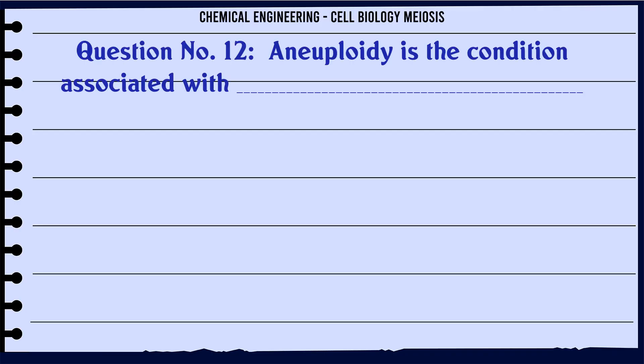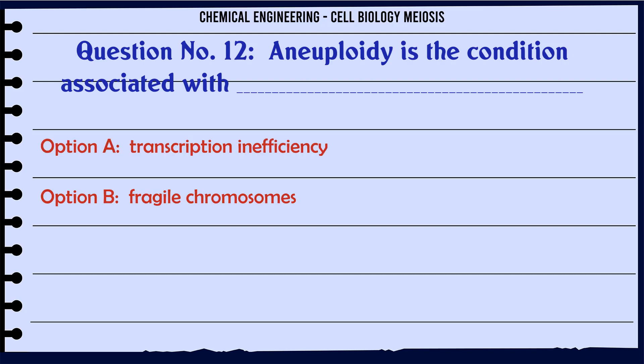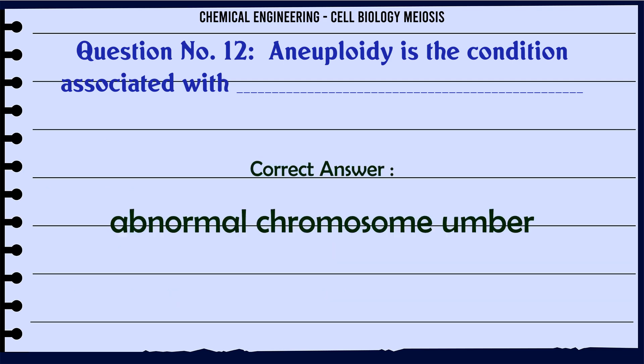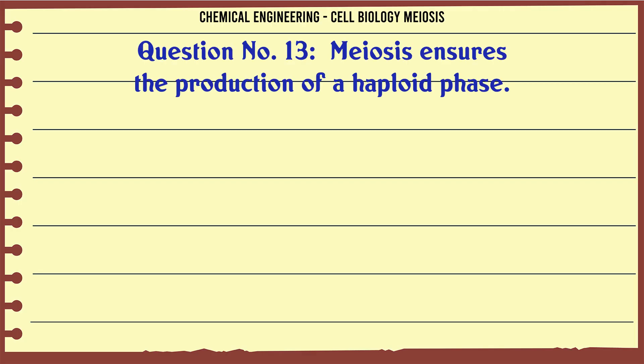Aneuploidy is the condition associated with: A. Transcription inefficiency. B. Fragile chromosomes. C. Abnormal chromosome number. D. Inability to perform meiosis. The correct answer is Abnormal chromosome number.